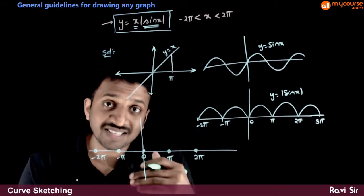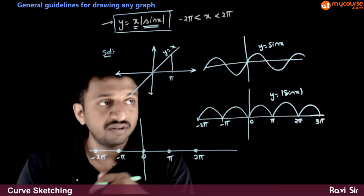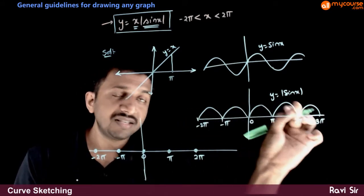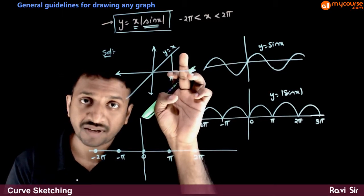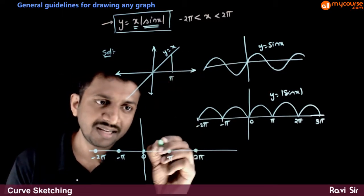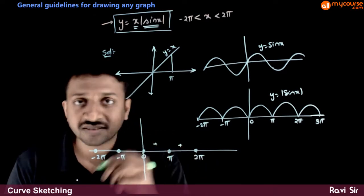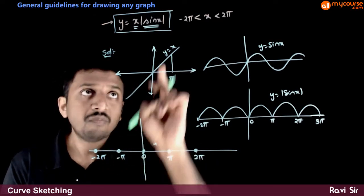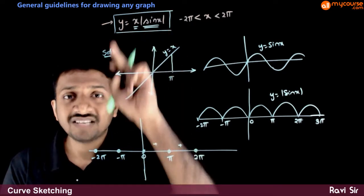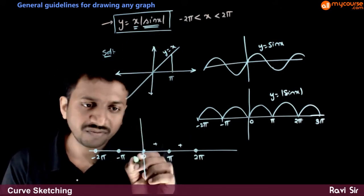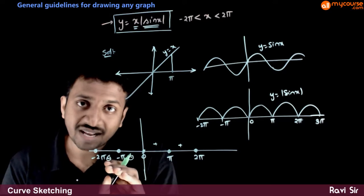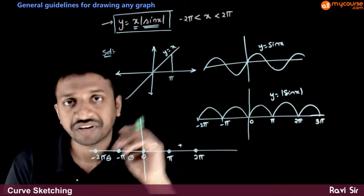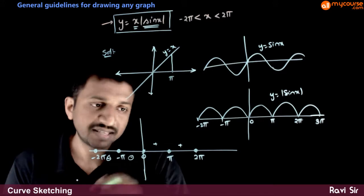Now let us try to analyze the signs of these functions. Mod sin x is always positive, sin x is also positive on the positive side of x-axis. So on this side, the curve will be above x-axis. Here mod sin x is positive but x is negative, so multiplication of these two. In this part, the curve lies below x-axis. In this part, the curve lies above x-axis.